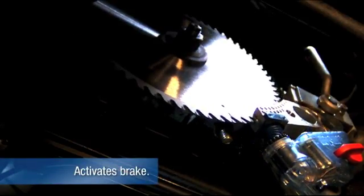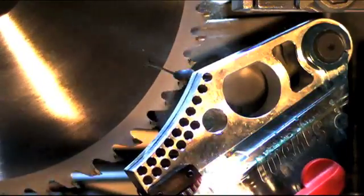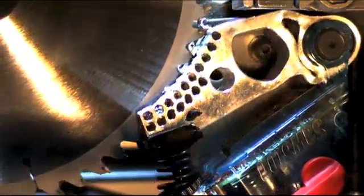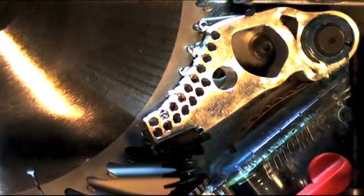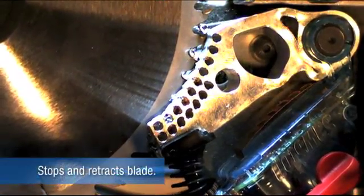This change in signal triggers a quick-release aluminum brake. A heavy-duty spring forces the brake into the teeth of the spinning blade. The teeth dig into the aluminum, stopping the blade cold.